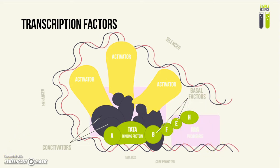Next, we look at specific transcription factors, which have more specialized roles. They will turn on certain genes at certain points of development. These specific transcription factors include the activator and the coactivators. On the DNA molecule, there would be enhancer sequences located thousands of bases upstream or downstream of the actual DNA sequence being transcribed.